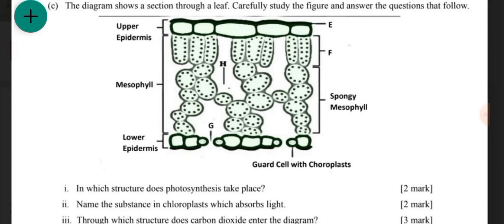The diagram shows a section through a leaf. Carefully study the figure and answer the questions that follow. The first question asks: in which structure does photosynthesis take place? Now, we all know photosynthesis takes place in a leaf, and this diagram shows you the cross-section of a leaf.